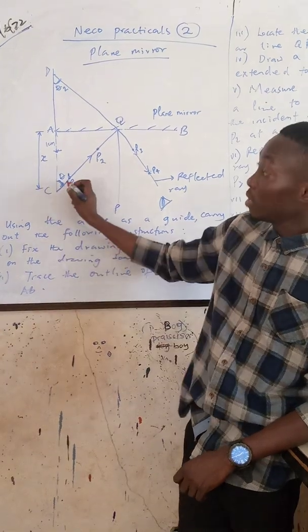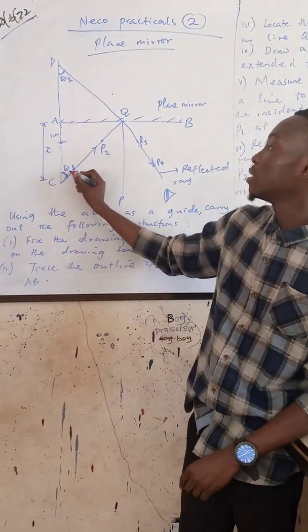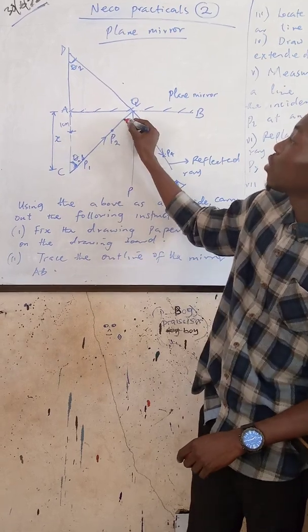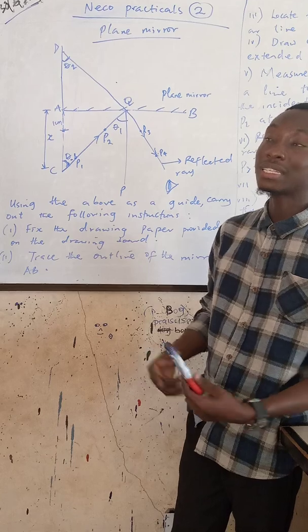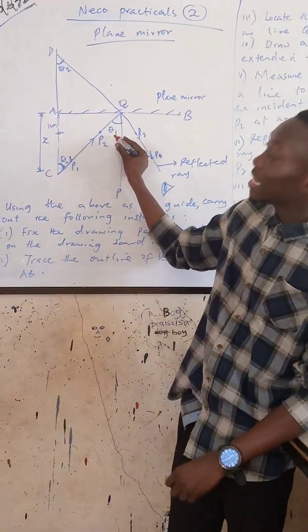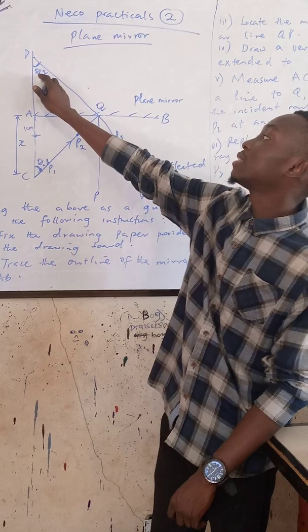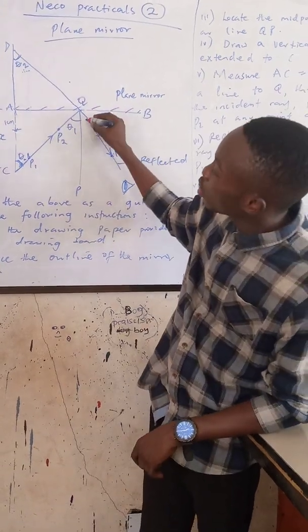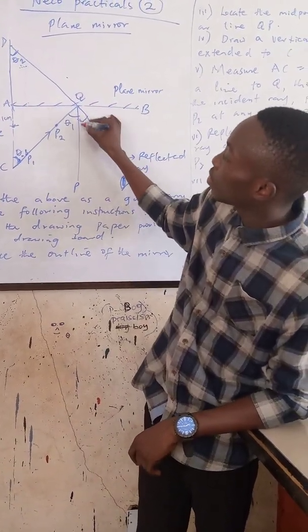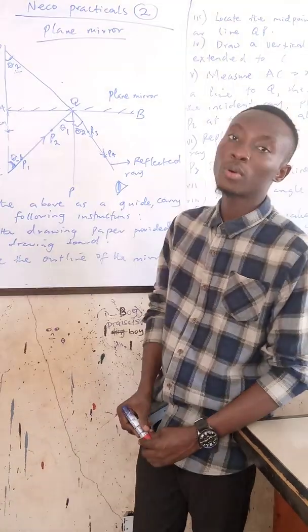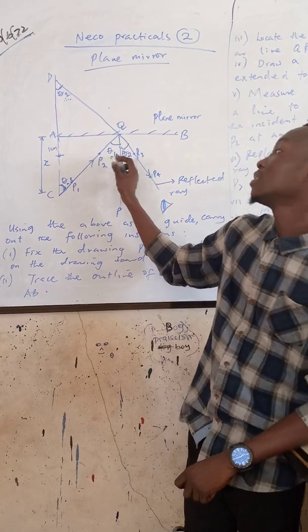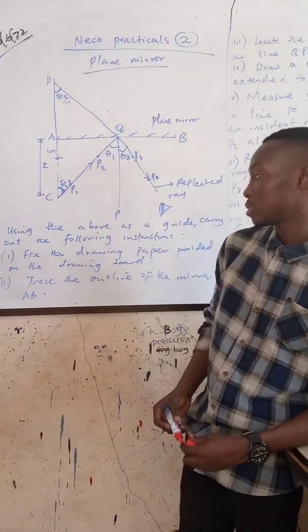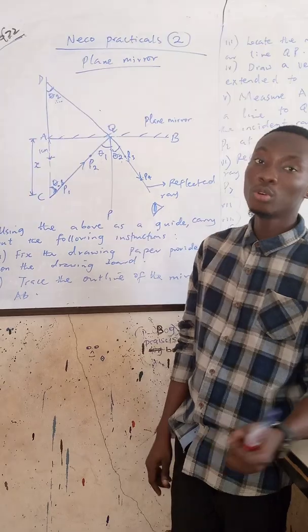In mathematics, if you have an angle inclined in such a direction, this theta 1 is equal to this angle here, which is also theta 1, and that theta 1 stands for our incident angle. Similarly, this theta 2 here should be equal to this theta 2 here, because corresponding angles are equal. So in that case, we have gotten our incident angle and our reflected angle. We are going to go to the experiment and practicalize this.